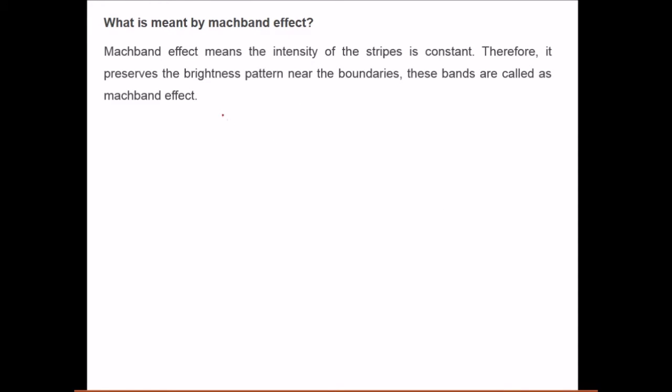What is meant by the Mach band effect? The Mach band effect means that the intensity of the stripes is constant, yet it preserves a brightness pattern near the boundaries. These bands are called the Mach band effect, or you can say the luminance near a boundary makes a pattern which is called the Mach band effect.